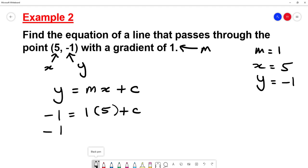So we get -1. 1 × 5 is 5 plus C. Now to get rid of the positive 5, we minus 5 on both sides. And so we get C = -6.